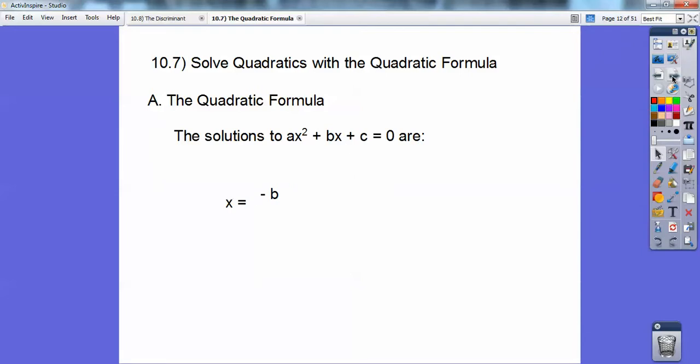One more time. x equals opposite b, plus or minus, square root of b squared minus 4ac, all over 2a.